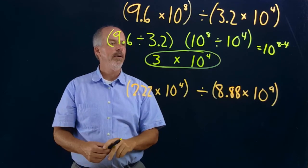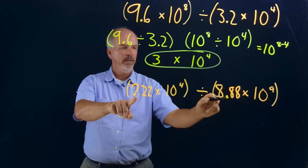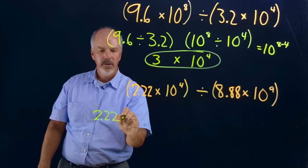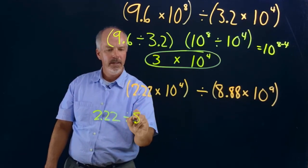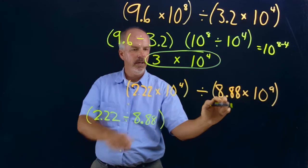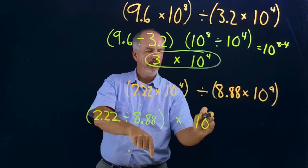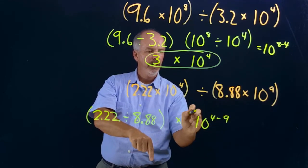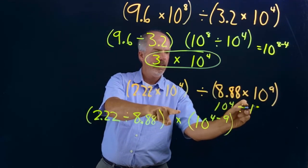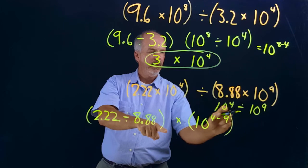So 10 to the 8 minus 4 gives us 10 to the 4th power. Our answer is 3 times 10 to the 4th power. Now let's look at another division example. We have 2.22 divided by 8.88 for our coefficients, and for our powers of 10 we have 10 to the 4th divided by 10 to the 9th. Since we're dividing, we subtract the exponents: 4 minus 9.